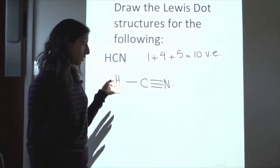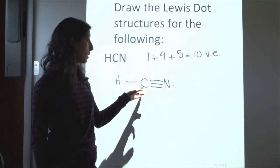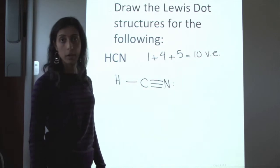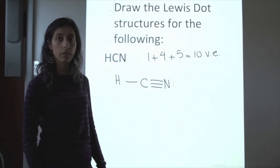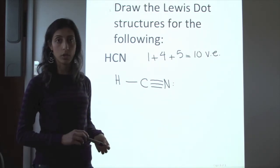So this is actually the correct Lewis dot structure of HCN. The carbon and the nitrogen are connected by a triple bond. I hope this video made sense. If it doesn't or if you still have questions, make sure to come to my office hours or attend the workshops on Wednesdays.